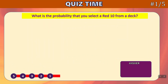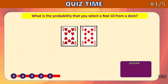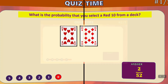What is the probability that you will select a red 10 from a deck of cards? Time's up. The answer is 2 out of 52 — the 10 of hearts and the 10 of diamonds are both red. 2 out of 52.